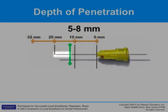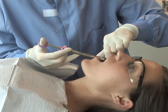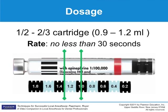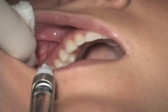The depth of insertion is approximately five to eight millimeters, depending on the apex of the tooth. Aspirate at the deposition site. Deposit a half to two-thirds of a cartridge over a period of not less than 30 to 45 seconds. Remove the needle gently and make it safe by properly recapping.